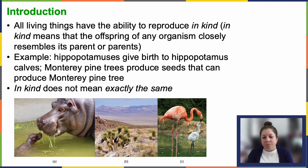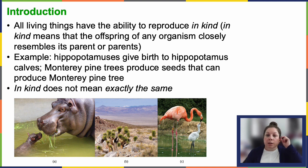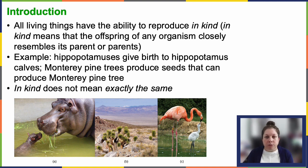In the animal kingdom, traits associated with sexual reproduction, like parental care and sexual behavior, are not universal. We see a huge range of diversity when it comes to this.